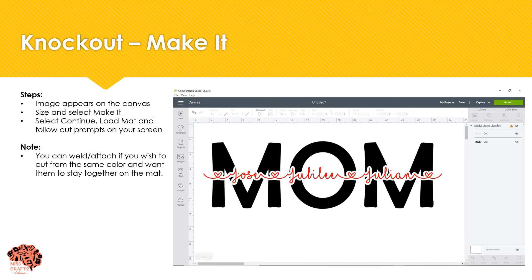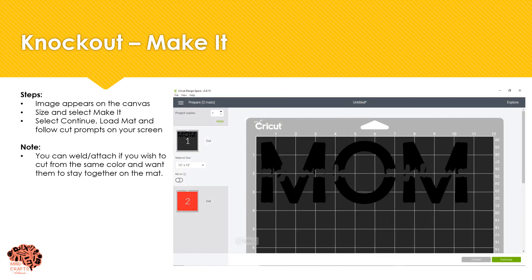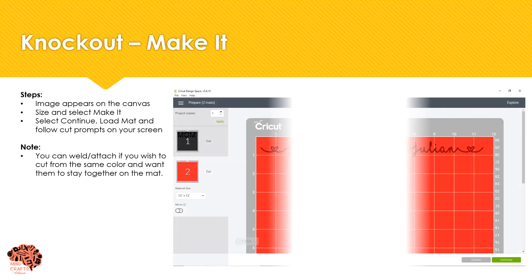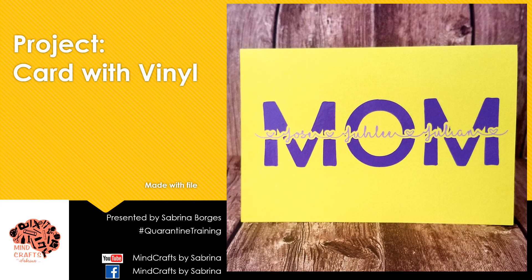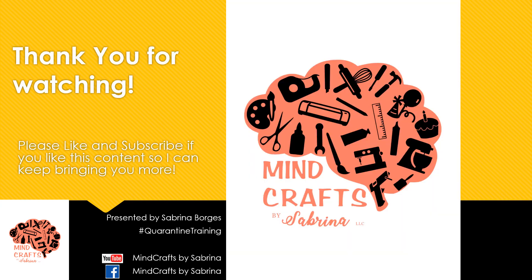Your images are going to appear on your canvas and they're going to be ready to cut. Simply size them and select Make It to send them to the mat. Because I didn't attach it and I'm cutting in two separate colors, I have two mats — just select Continue and follow the prompts on screen to cut them. Thank you so much for watching, don't forget to like and subscribe so you can be notified the next time I post content.